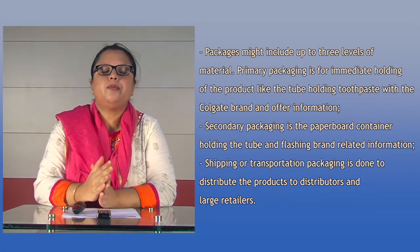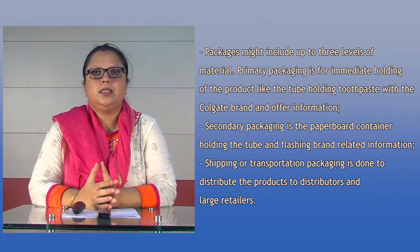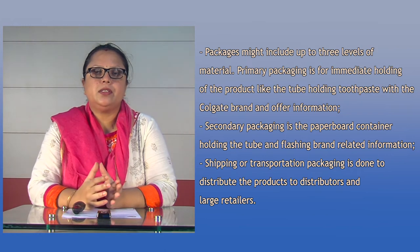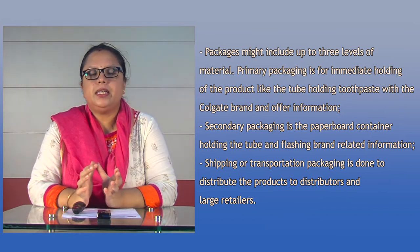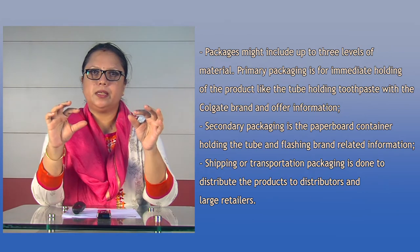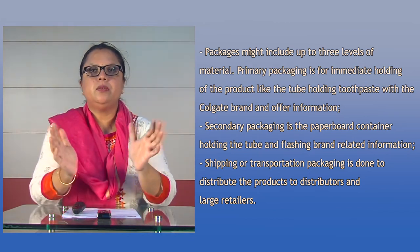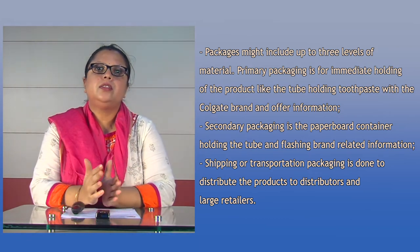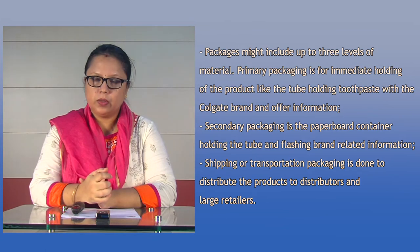Packages might include three levels of material. The first, primary level of packaging, is for immediate holding of the product — for example, the tube holding the toothpaste. The second is secondary packaging, such as the paperboard container holding the tube and displaying brand-related information — like the paperboard box for Colgate where all detailed information is given. The third level is shipping or transportation packaging, used when distributors distribute in large quantities to retailers and wholesalers.